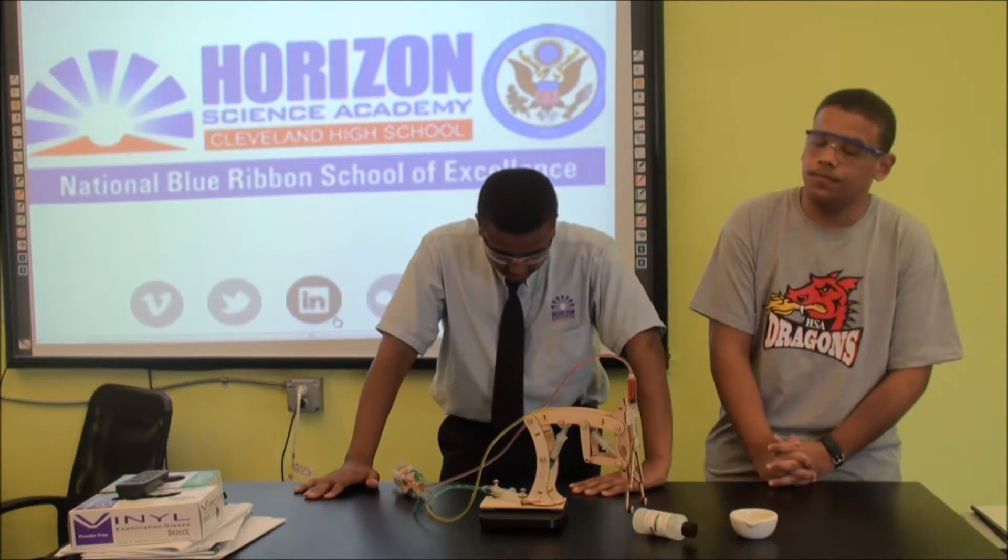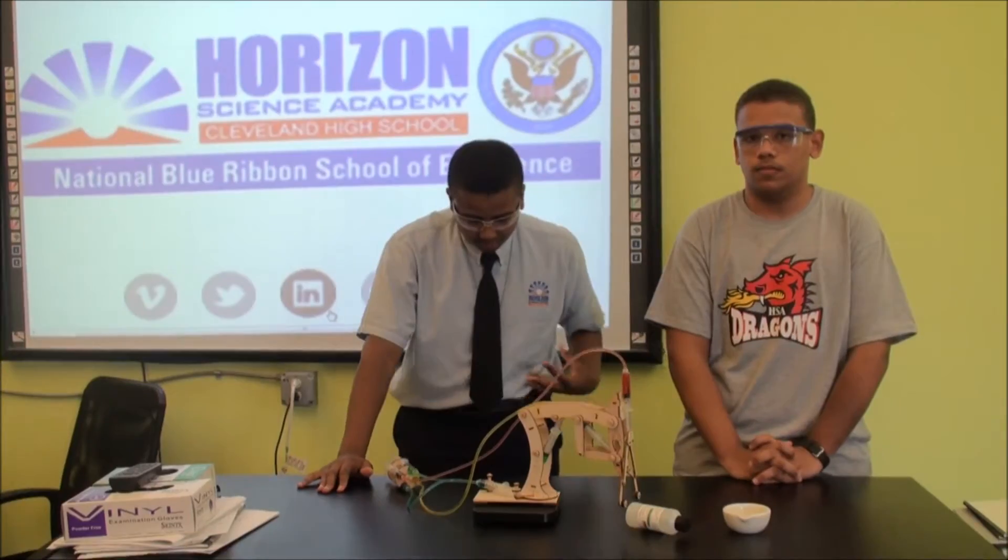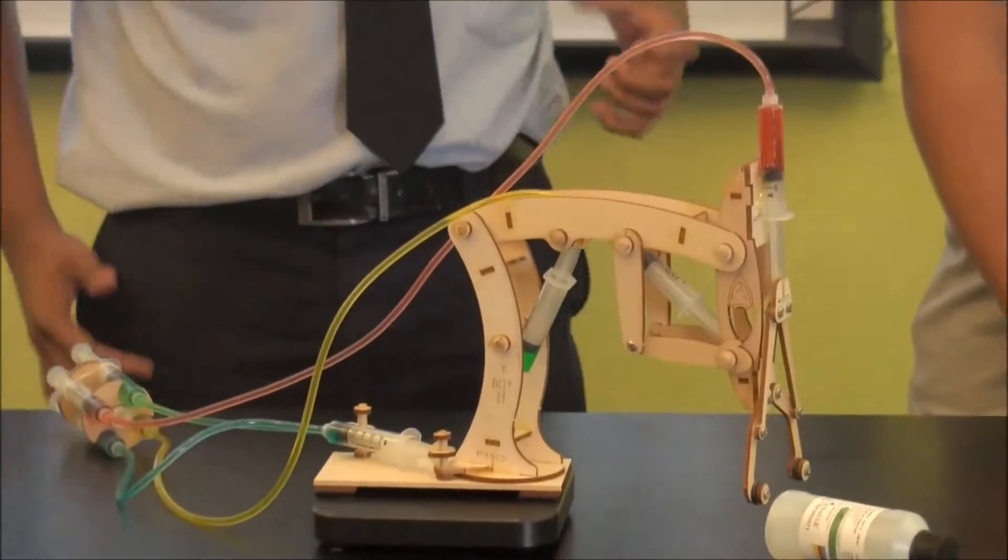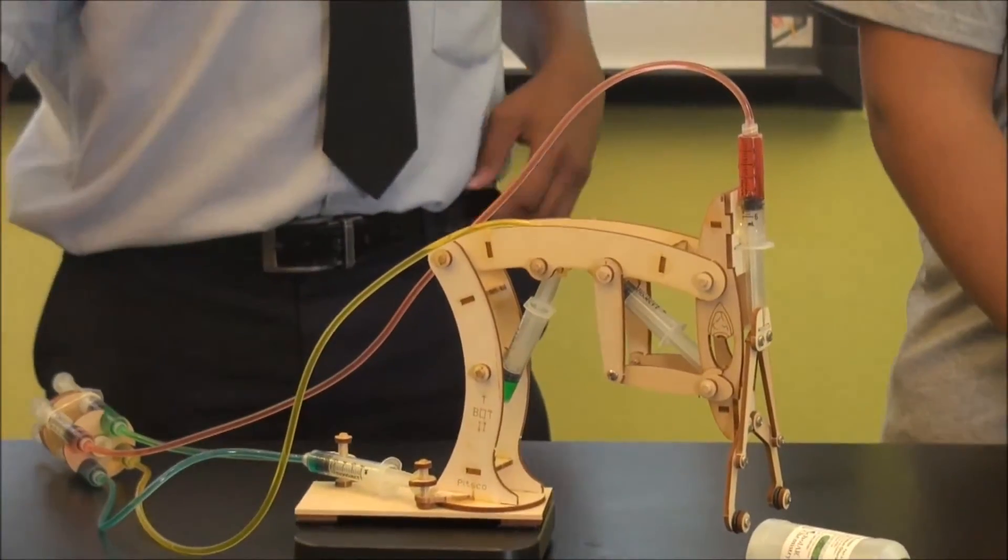There are axes on this robot. Axes are a point where a part moves. The T-Bot has four axes of motion.